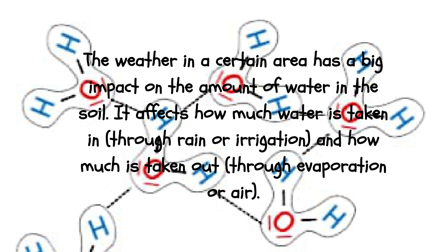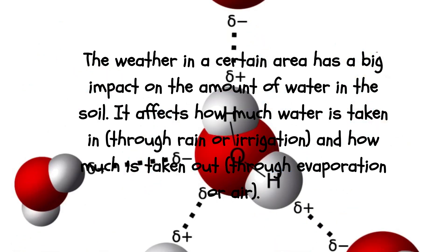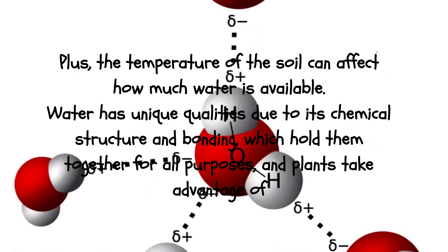The weather in a certain area has a big impact on the amount of water in the soil. It affects how much water is taken in through rain or irrigation, and how much is taken out through evaporation or transpiration. Plus, the temperature of the soil can affect how much water is available.